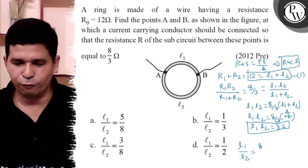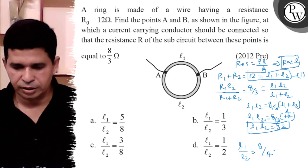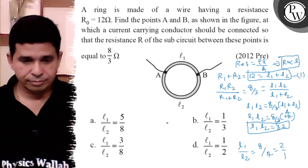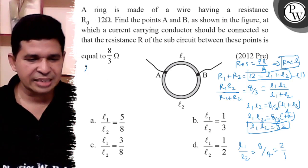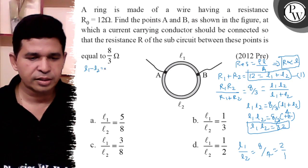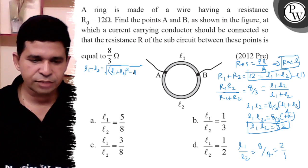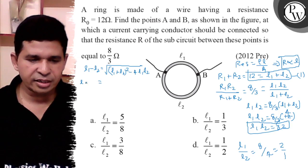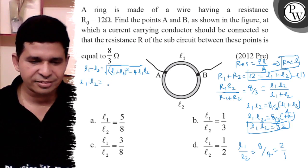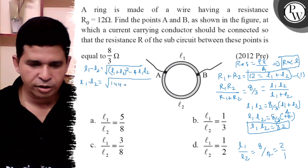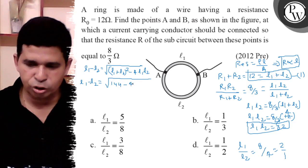The ratio is 8 by 4, so it is 2 is to 1. You can find out L1 minus L2 using that formula: the square root of L1 plus L2 whole square minus 4 L1 L2. That gives us the square root of 144 minus 4 into 32.